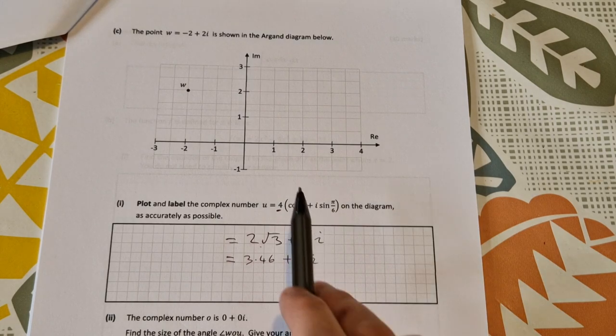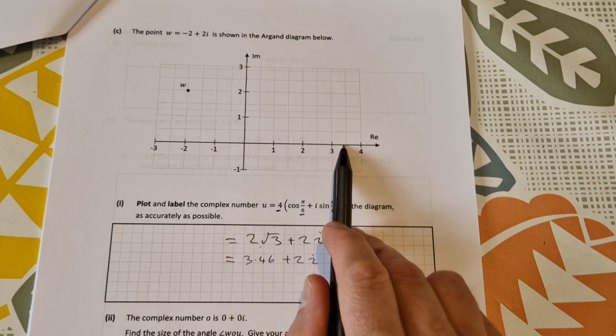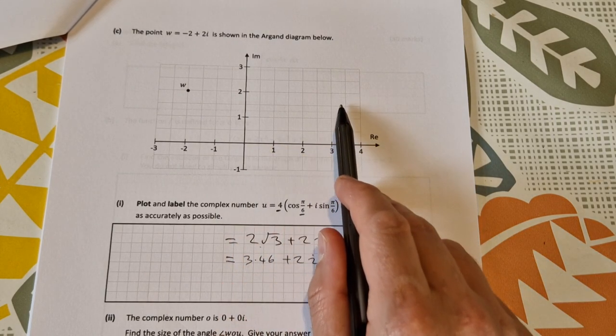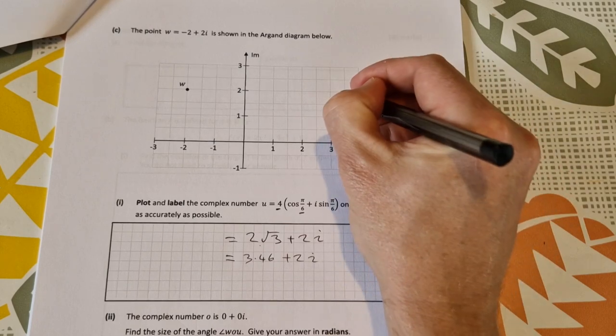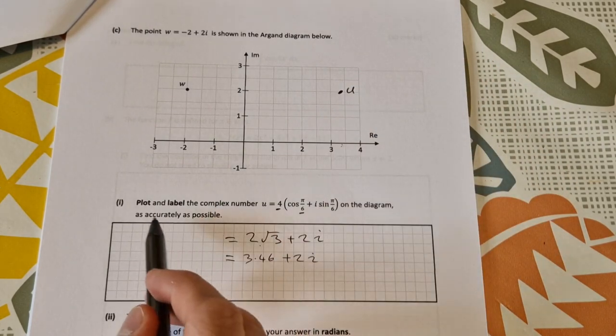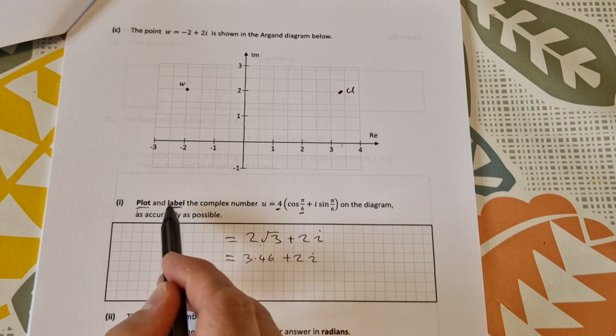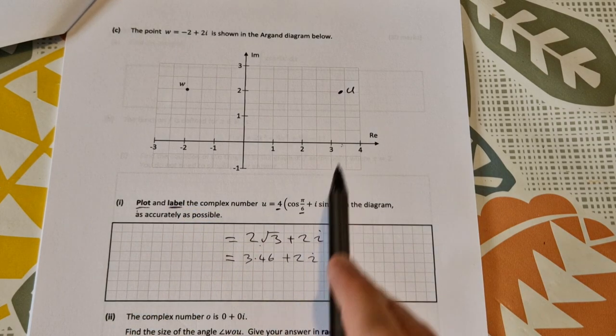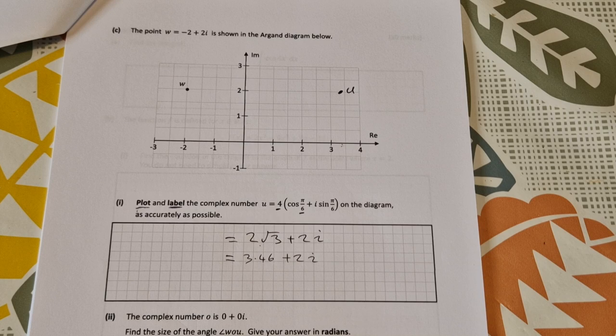So if I go up 3.46 is around about here, and then up 2, so it's basically here. So that is u, and it's plot and label, I think they take off one mark if you don't label it, so you need to write down that it is u there.